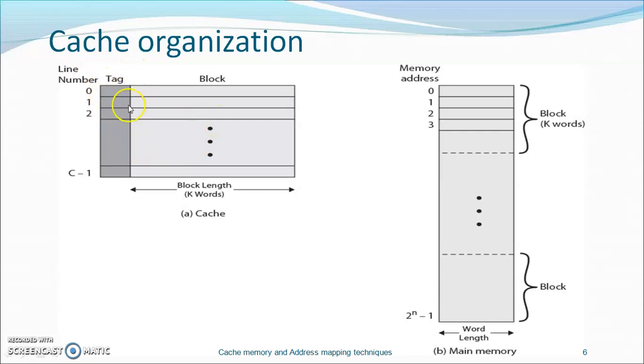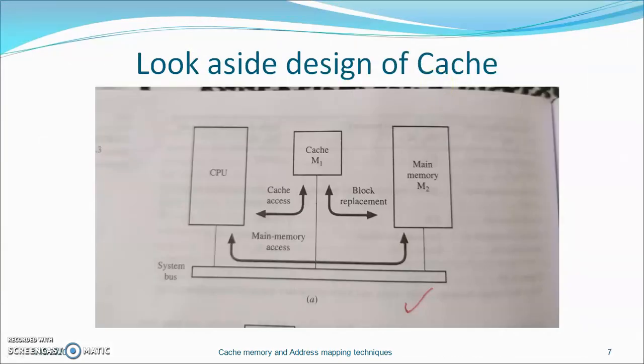The cache consists of a number of blocks and tag information, with a number of lines, whereas main memory consists of blocks with k-words. We are going to consider two designs of cache. The first is the look-aside design, where cache and main memory are directly connected to the system bus. The CPU initiates memory access by placing a real address on the memory address bus at the start of a read or write cycle. The cache immediately compares this address with the tag addresses in its tag memory. If a match is found — a cache hit — the access is completed by a read or write operation in the cache; main memory is not involved. If no match is found, a cache miss occurs.